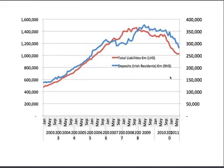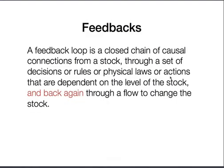Here's the money that flowed out and then into the Irish economy in terms of deposits and liabilities over the last eight or nine years. If you're talking about stocks and flows, you have to think about feedbacks. A feedback loop is a closed chain of causal connections — for example, I consume more, that gives you more income, my disposable income goes up, therefore I consume more. Through a set of decisions, rules, or physical laws that are dependent on the level of the stock and back again — that's the feedback effect.